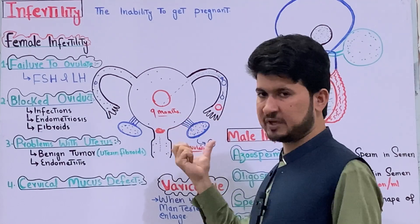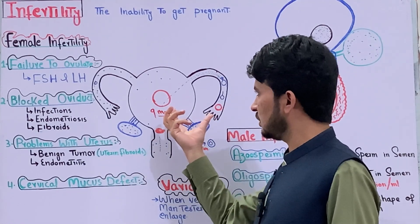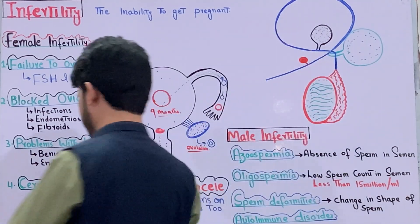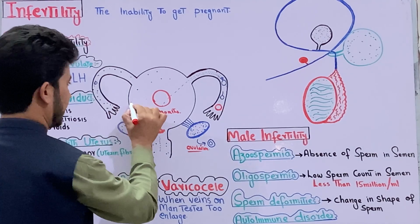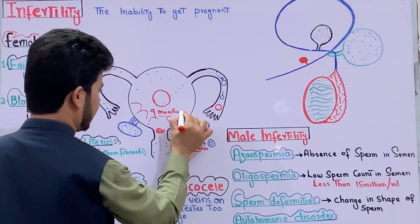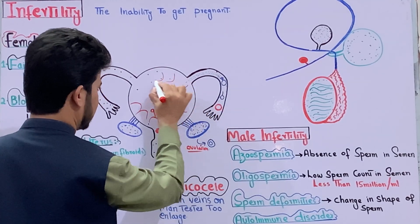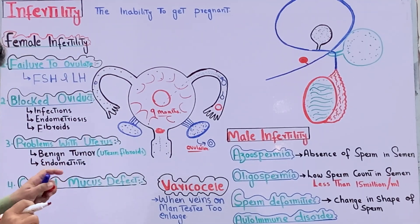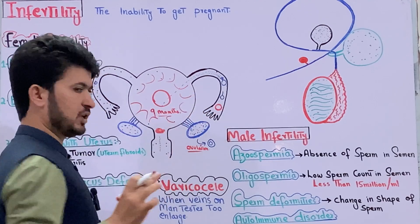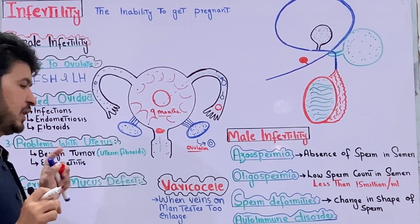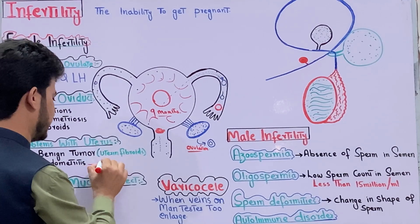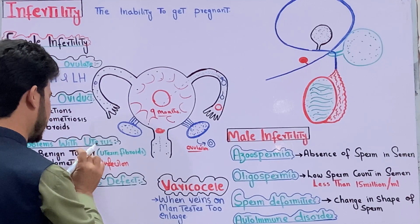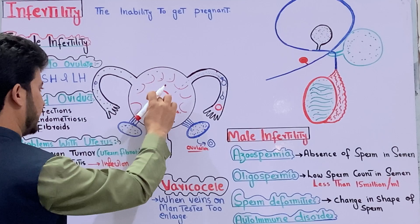Uterine problems causing female infertility include physical damage, endometritis (inflammation of the endometrium), infection of the vagina, benign tumor development, and uterine abnormalities. These conditions can interfere with the implantation process.